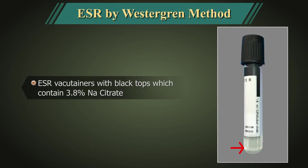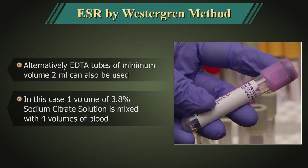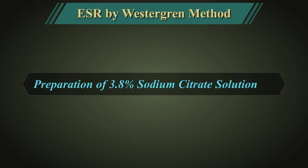ESR vacutainers with black tops contain 3.8% sodium citrate. Alternatively, tubes of minimum volume 2 ml can be used. In this case, one volume of 3.8% trisodium citrate solution is mixed with 4 volumes of blood.